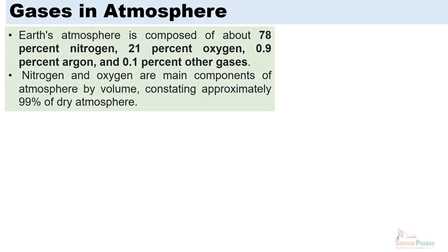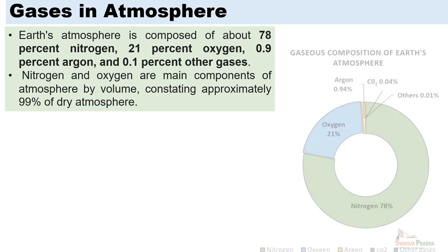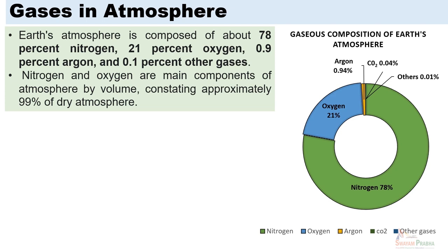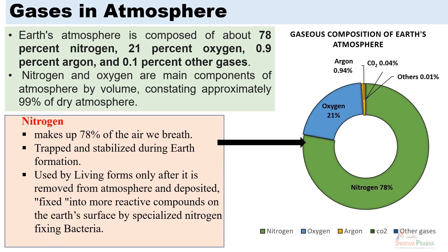Regarding the gases: we know today that the earth's atmosphere is made up of 78% nitrogen, 21% oxygen, 0.93% argon — less than 1% — and the remaining 0.1% consists of other gases including carbon dioxide, methane, and ozone. Nitrogen and oxygen are the main components of the atmosphere by volume, constituting approximately 99% of the dry atmosphere. As you can see in the pie chart, a very large portion of atmospheric composition is taken up by nitrogen and oxygen. Nitrogen, although its significance is variable, makes up 78% of the air we breathe, and it was trapped and stabilized during earth's formation.